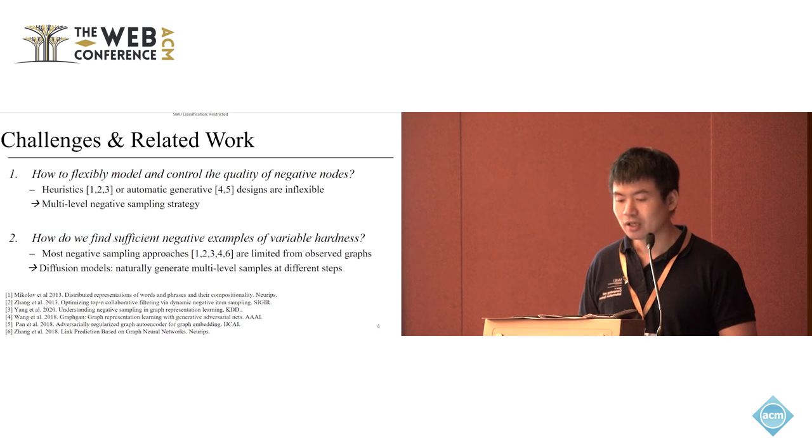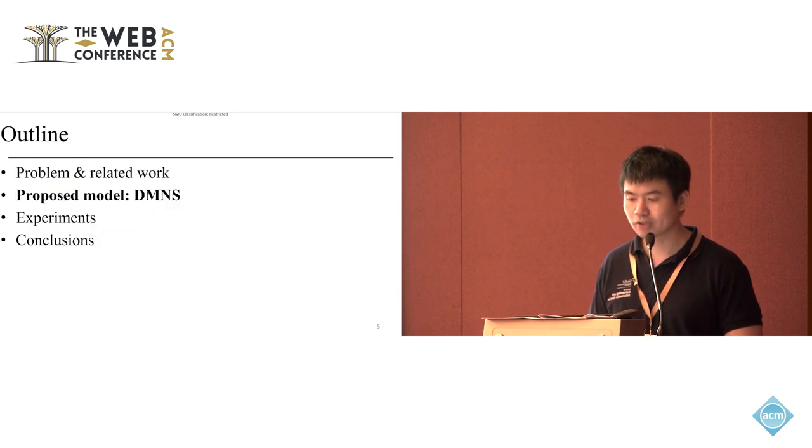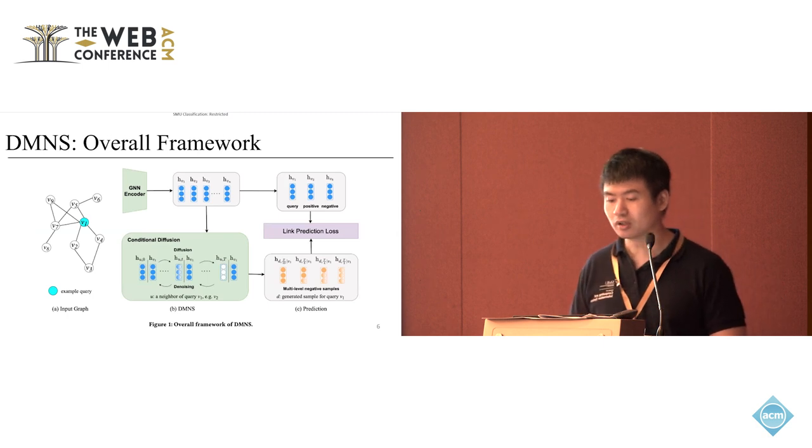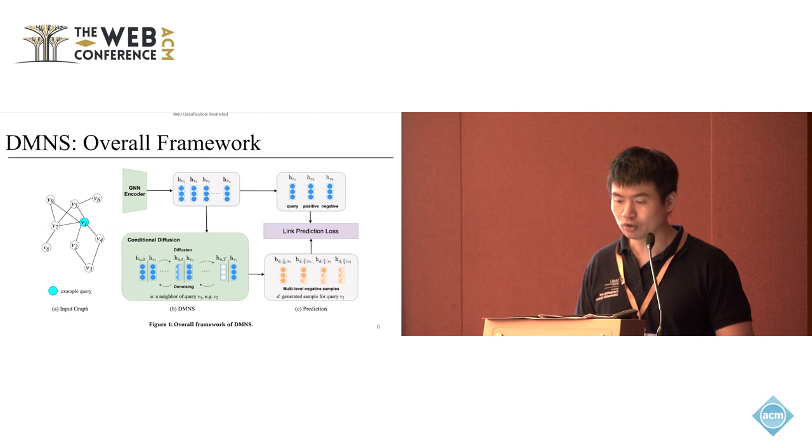How do we find sufficient negative examples for different hardness? Most existing approaches are limited from the observed graph, so you can only sample the negative nodes from the graph that you have observed. But in our case, we propose to use a diffusion model. The diffusion model can generate many samples and we can flexibly control the difficulty level of the samples. This leads to our method called DMNS, which is a diffusion model for negative sampling.